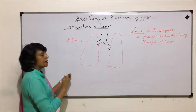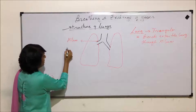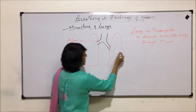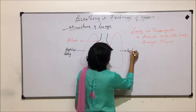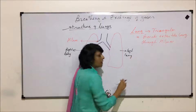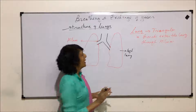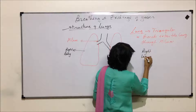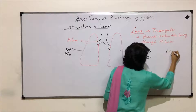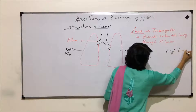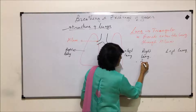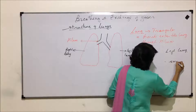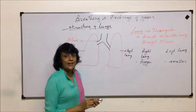The right lung is bigger as compared to the left one. Now let us take the comparison between the two lungs — right lung and left lung. The right one is bigger and the left is smaller. This is the difference in size.